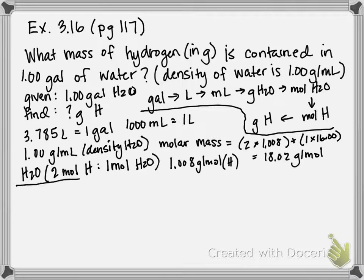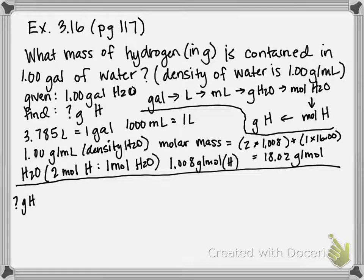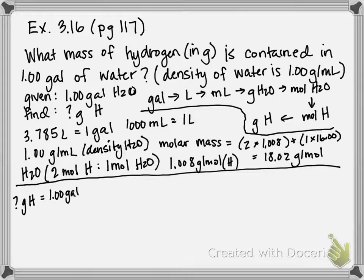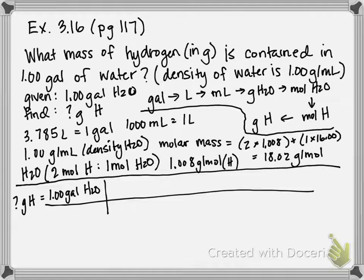So let's go ahead and start solving this problem. We're looking for grams of hydrogen and we're given 1 gallon of water. So as I use the conversion factors I'll cross them out so we know that we're not going to use them anymore. So step 1, gallons to liters. I'm going to use my conversion factor right here. What I want to cancel goes on bottom. So 1 gallon is equal to 3.785 liters. Gallons cancel. Now I'm in liters.